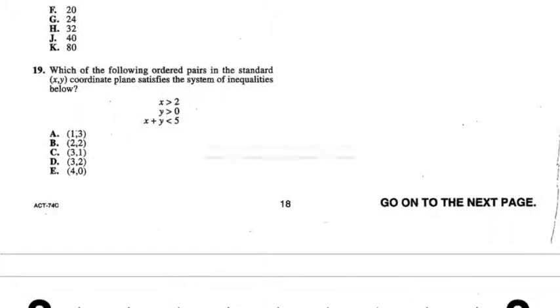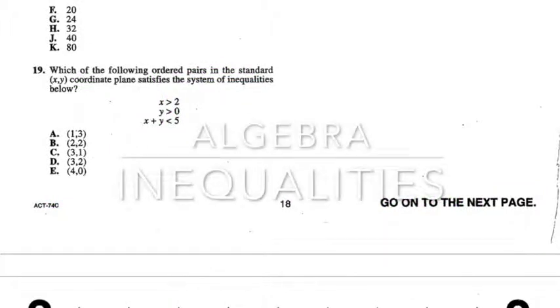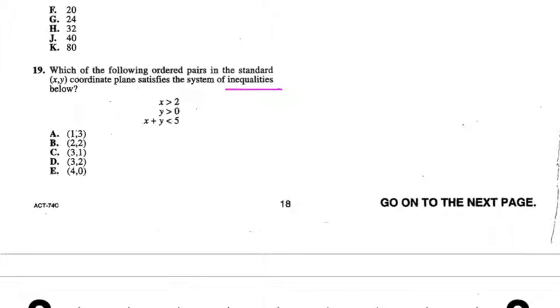Number 19 is an algebra question dealing with inequalities. Which of the following ordered pairs in the standard xy coordinate plane satisfies the system of inequalities below? I'm going to use process of elimination. Let's start with the first inequality: x is greater than 2. It's not greater than 2 here, and it's not greater than 2 here. Has to be greater than 2, not greater than or equal to 2. Then let's look at the second inequality: y has to be greater than 0. Y is not greater than 0 here.